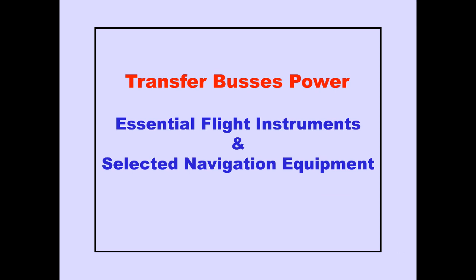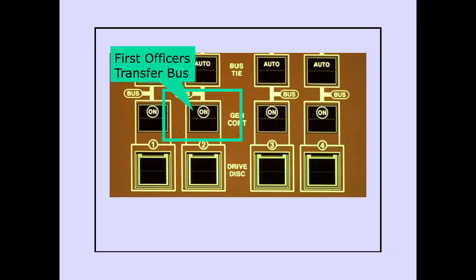Many of the captain's and first officer's essential flight instruments and selected navigation equipment receive AC power from their respective transfer buses. The first officer's transfer bus is normally powered by AC bus 2, and the captain's transfer bus is normally powered by AC bus 3.